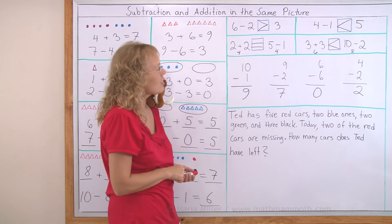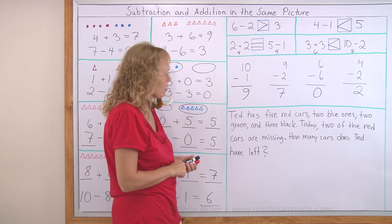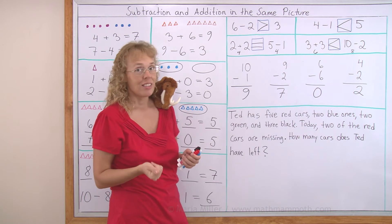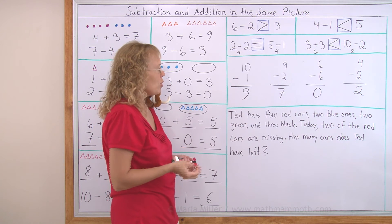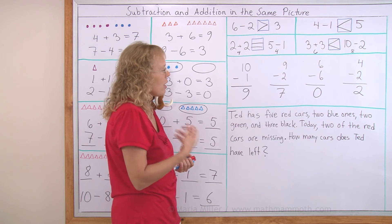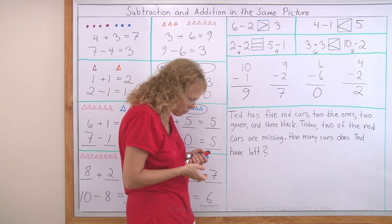Ted has five red cars, two blue ones, two green and three black cars. Today, two of the red cars are missing. How many cars does Ted have left? Is that Matthew?